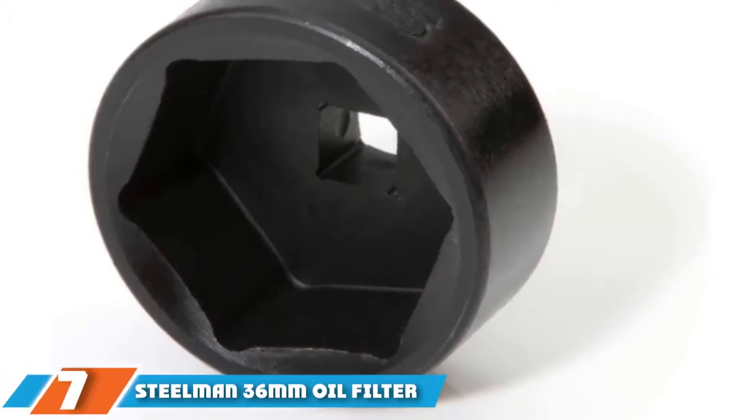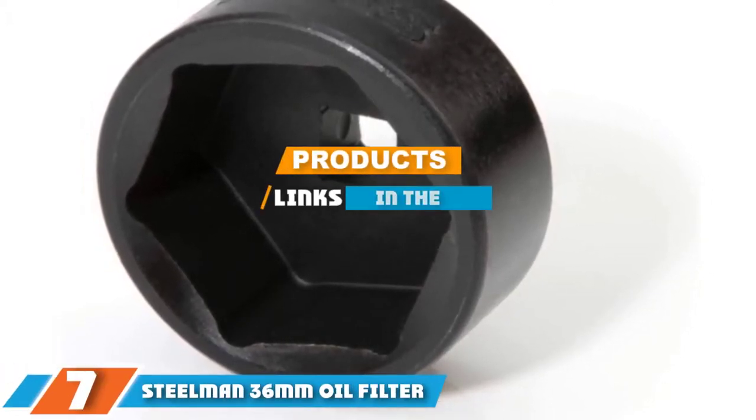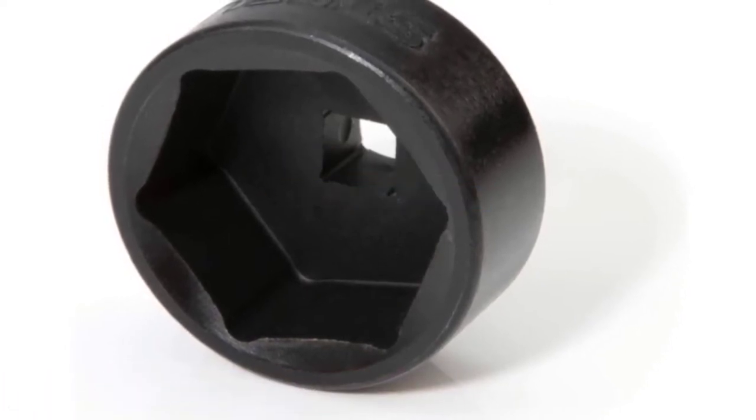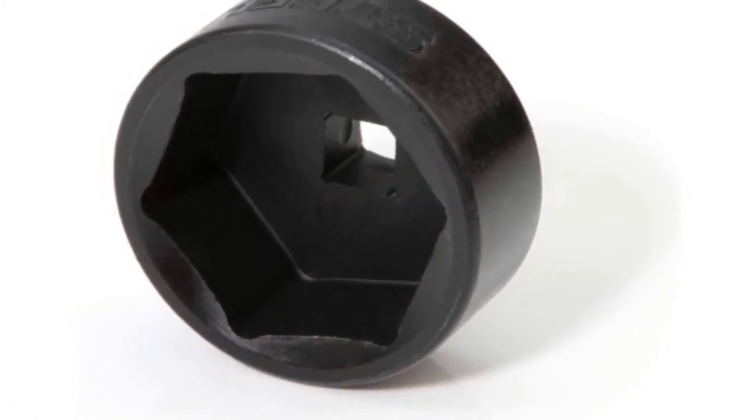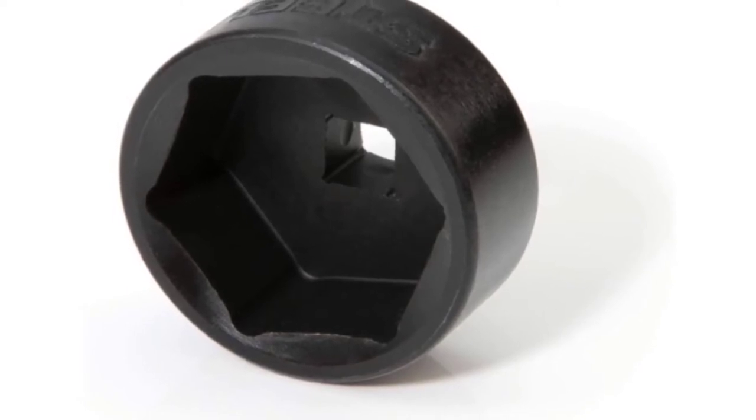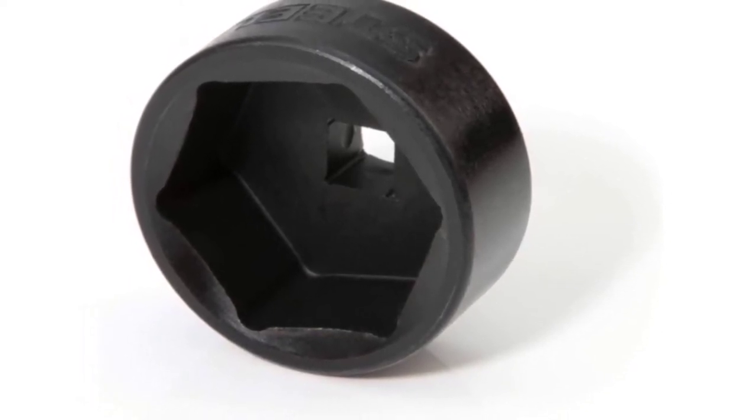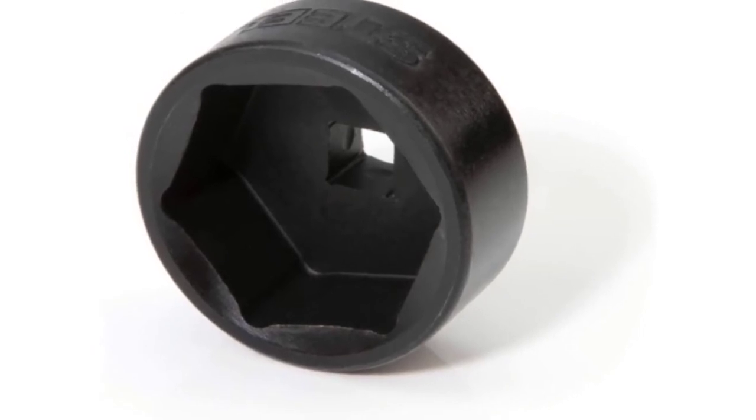At the seventh position of our list, we have the Steelman 36mm oil filter wrench socket. Steelman offers a low profile socket designed to fit all kinds of oil filter caps, even those located in super tight areas. It's 1.5 inches tall and suitable for different oil filters, including those found on Ford, BMW, and Audi.